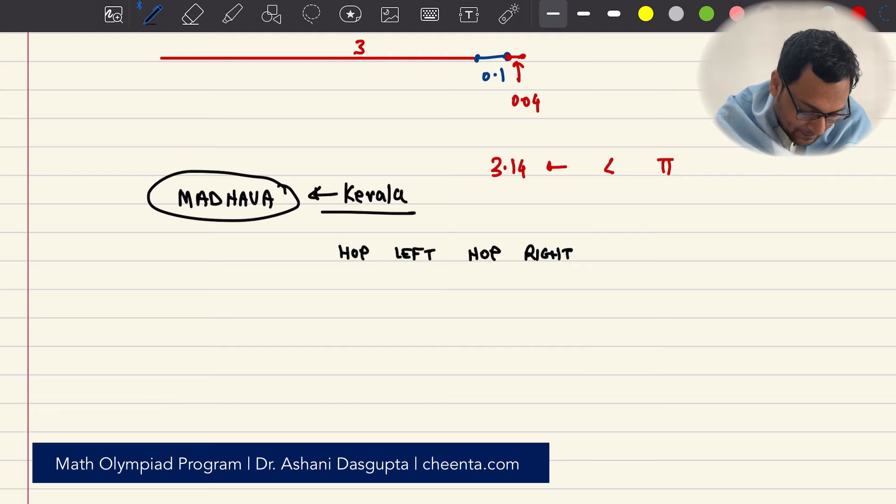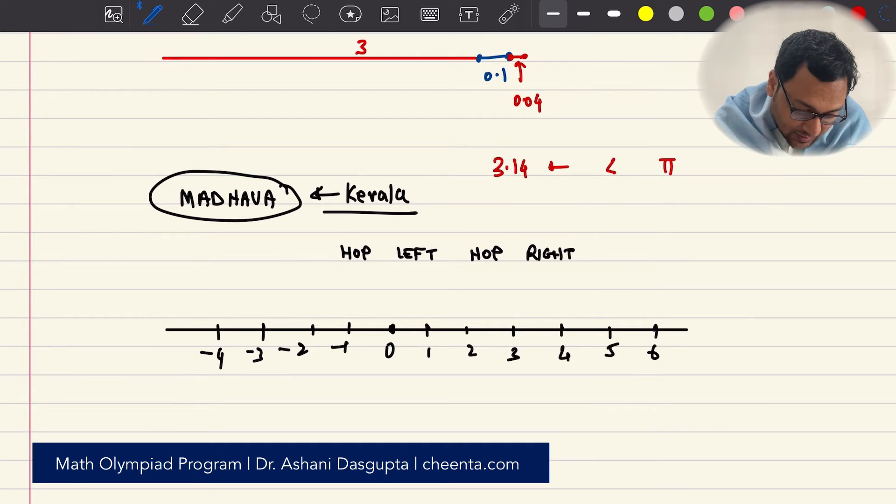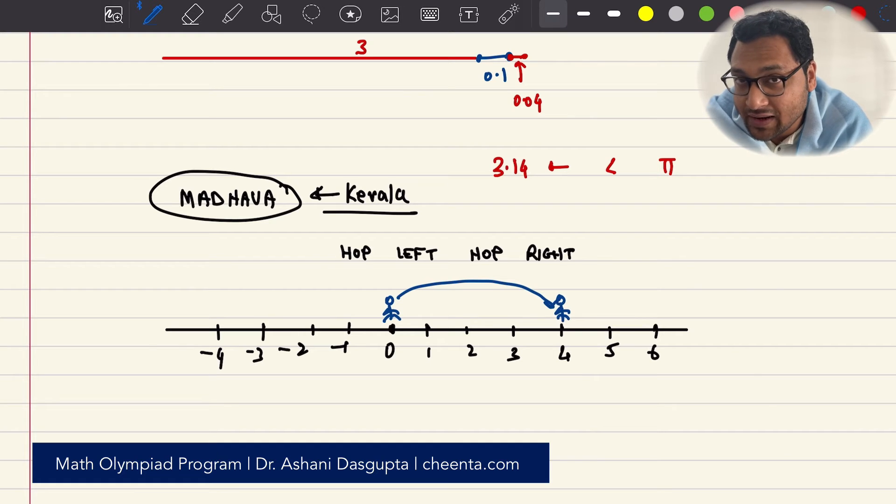What is this? Well, Madhava said, okay, draw a number line. So this is 0, 1, 2, 3, 4, 5, 6, and there is minus 1, minus 2, minus 3, minus 4, and so on. So suppose you are standing at the point 0. So, you hop to the right, 4 units, now you're here.